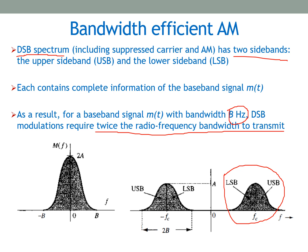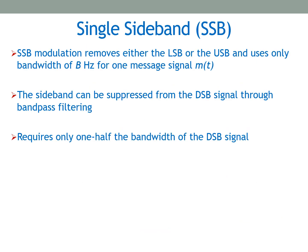This is not a very efficient technique for utilizing bandwidth. The solution is to use single sideband (SSB) modulation, where we transmit either the lower sideband or the upper sideband. This uses only bandwidth B Hz, equal to the bandwidth of the message signal. A sideband can be suppressed from a DSB signal through bandpass filtering, though this technique is not very efficient as suppression will not be perfect. SSB requires only half the bandwidth of the DSB signal.